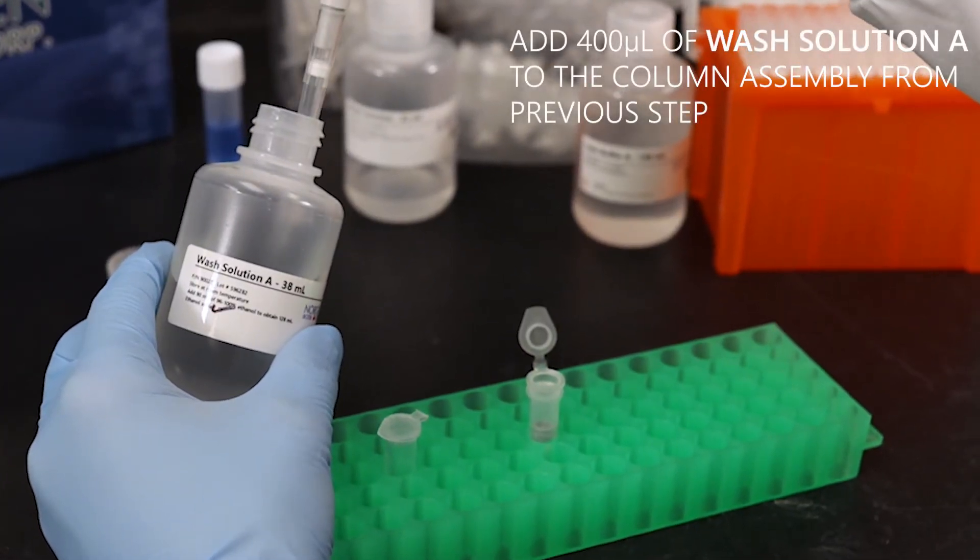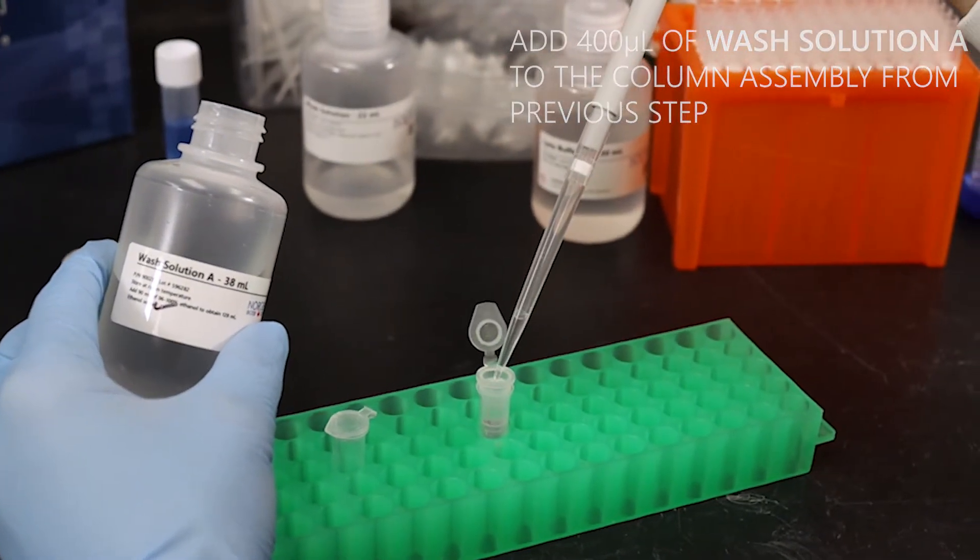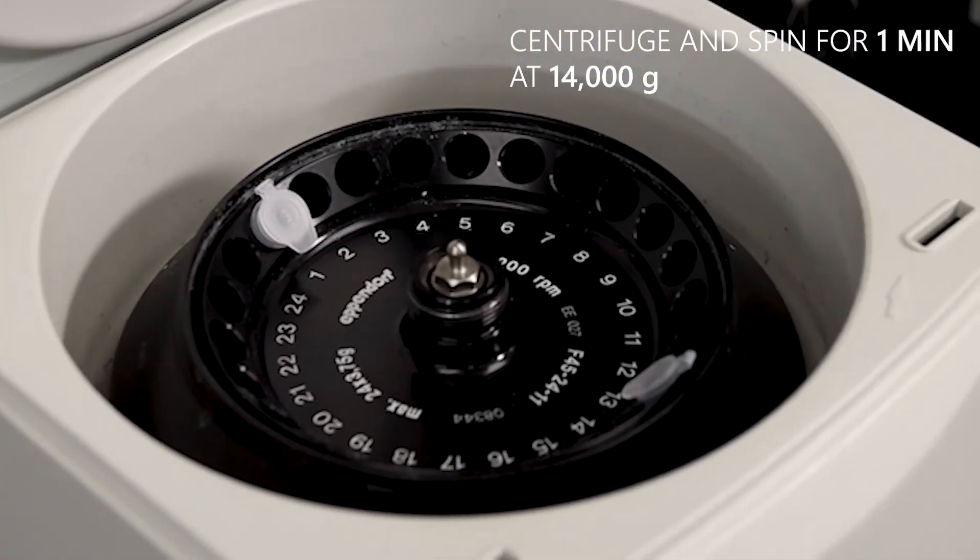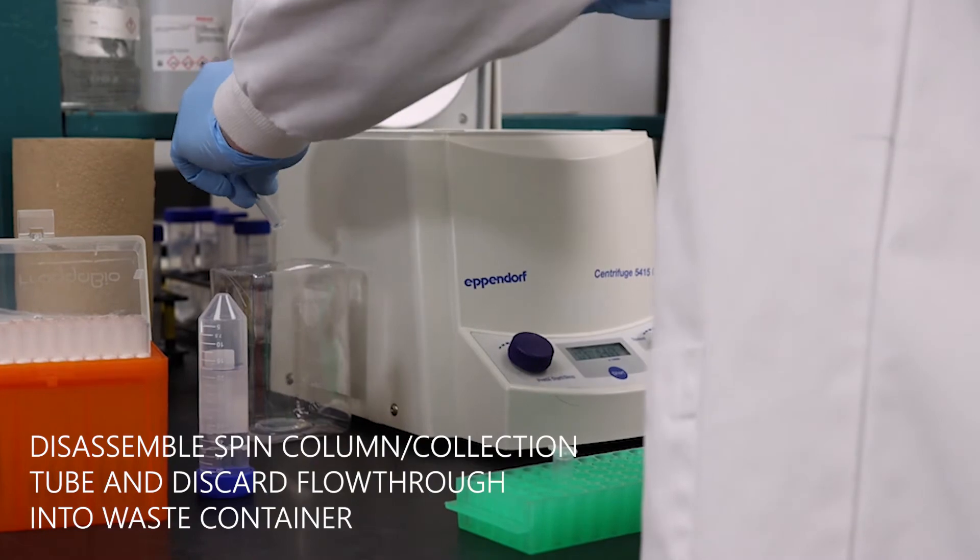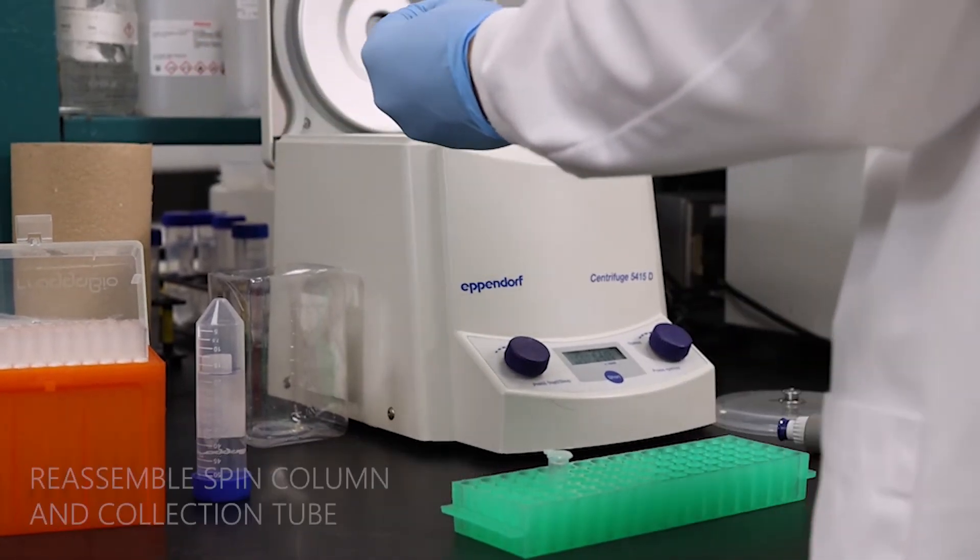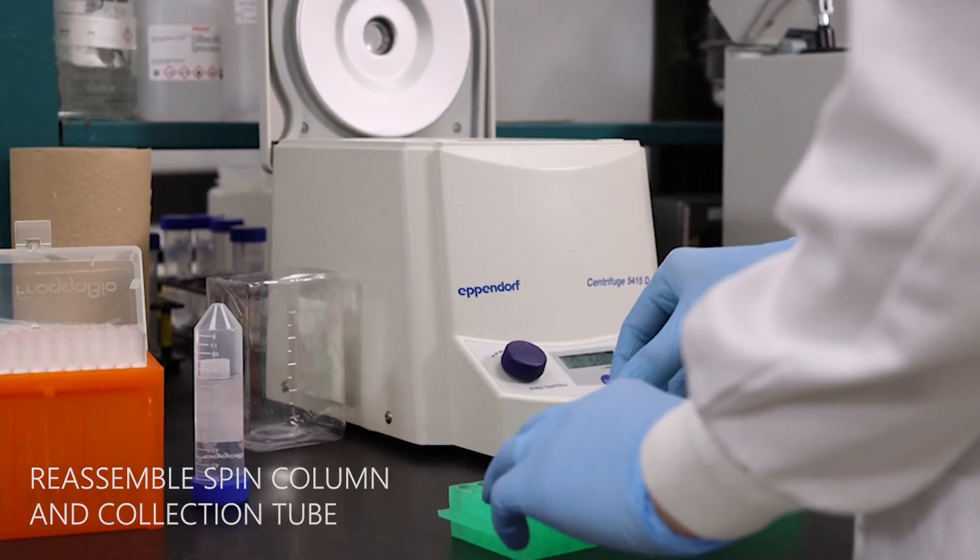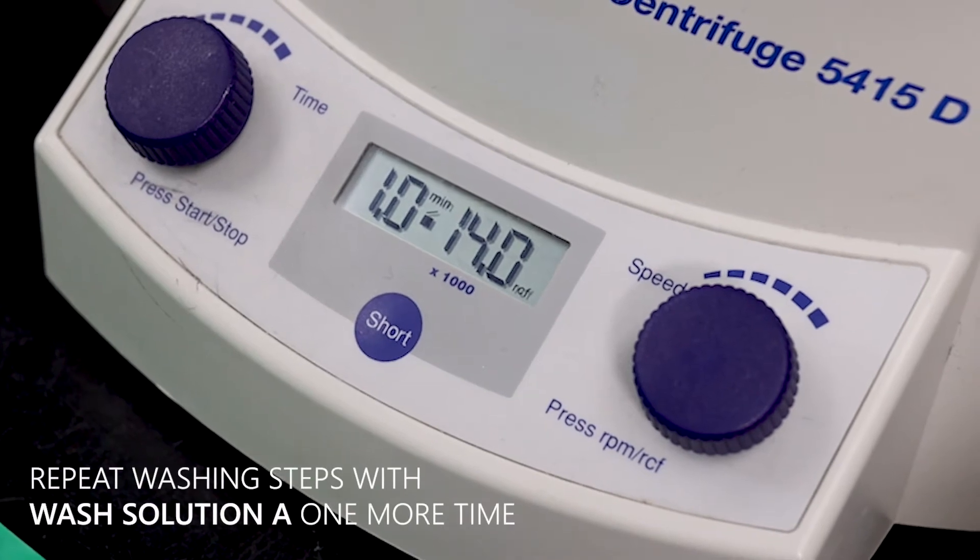Next, add 400 microliters of Wash Solution A to the column assembly. Centrifuge for 1 minute at 14,000 G. Discard the flow through into a waste container. Reassemble the spin column and collection tube. Repeat the wash step with Wash Solution A.